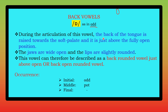During the articulation of this vowel, the back of the tongue is raised towards the soft palate and it is just above the fully open position. Jaws are wide open and the lips are slightly rounded. So it can be described as a back open rounded vowel — just above open position.